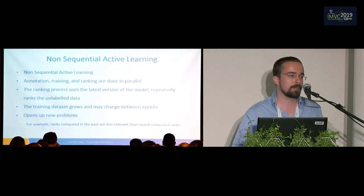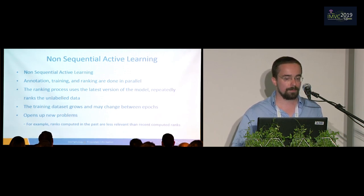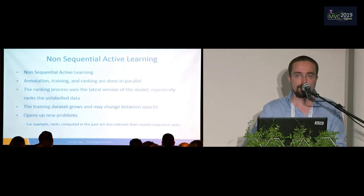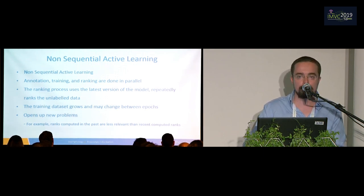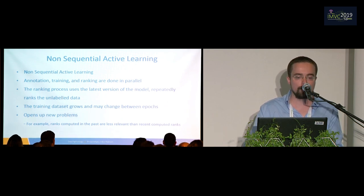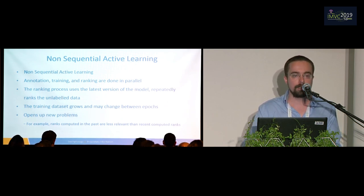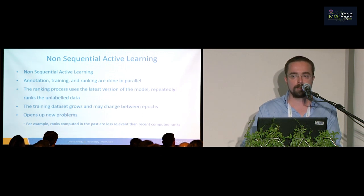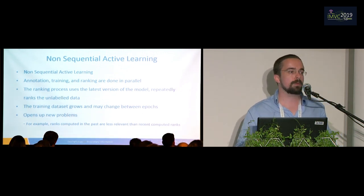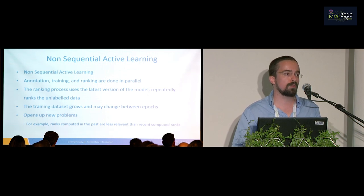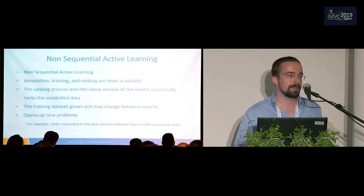The benefit of this is that active learning is very fast — we don't have to wait for every stage to finish. But this opens up a new line of problems. For example, if one image was ranked 10 minutes ago and another was ranked 10 seconds ago, then probably the more recent rank is more relevant, so we have to address that.